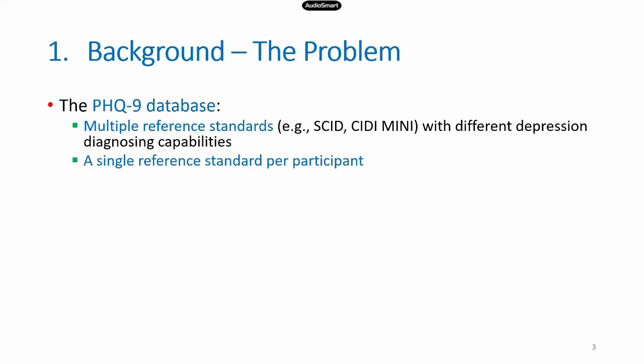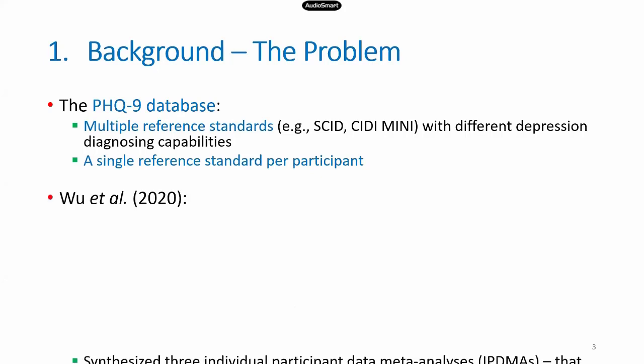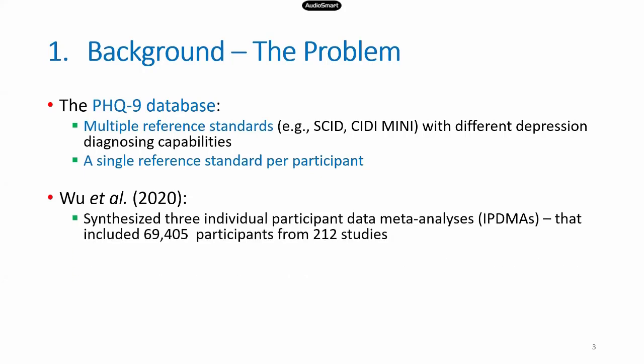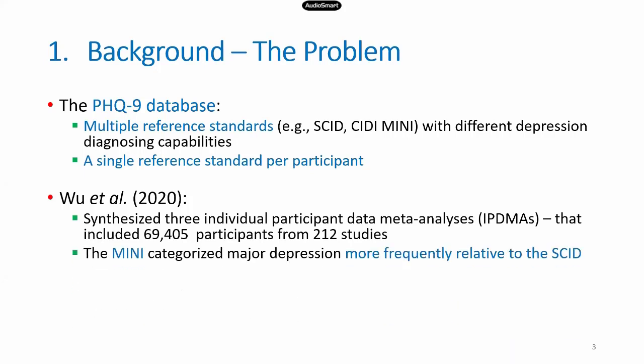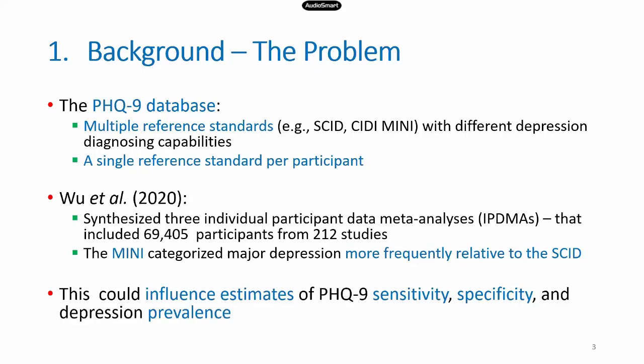For example, our colleague Wu and others have shown, by synthesizing three different individual participant data meta-analyses including over 69,000 participants from over 200 studies, that the Mini categorizes major depression very frequently relative to the semi-structured SCID. Having this type of property among reference standards could lead to biased estimates of PHQ-9 sensitivity as well as depression prevalence.